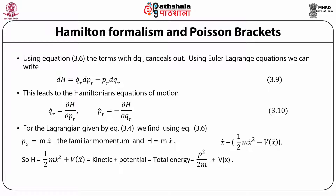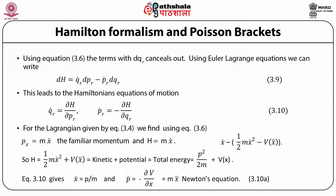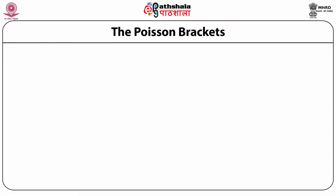We get x-dot as p divided by m, and p-dot equals minus dV/dx, which equals m x-double-dot. This is Newton's second law of motion.